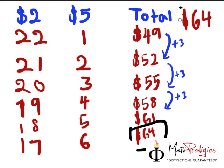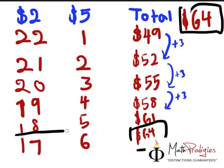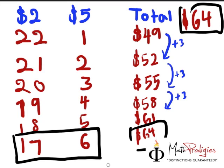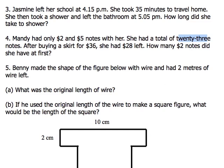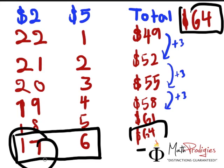We hit the jackpot — woohoo! $64 is the answer we are looking for. So in other words, when she has $64, she has 17 $2-notes and 6 $5-notes. The question is asking us for the $2 notes she had at first, so the answer is 17. If you got that one right, I'm super proud of you — high five to you because you are a math prodigy! Good job.